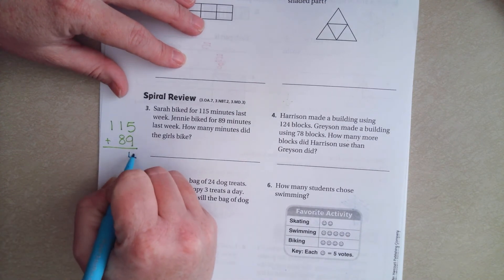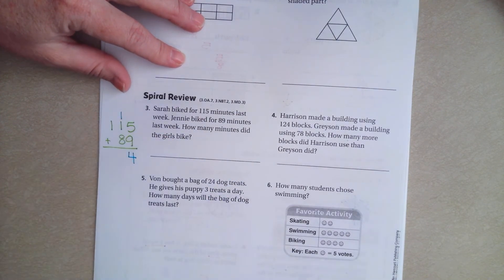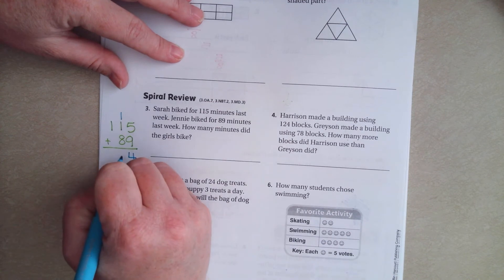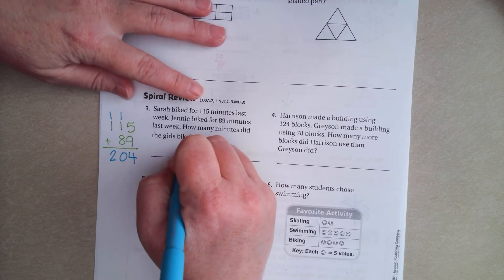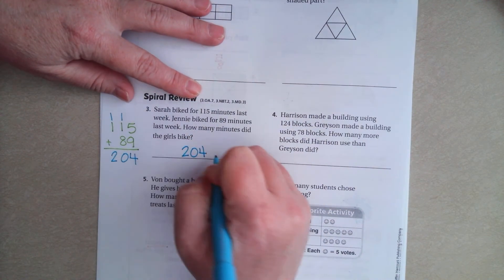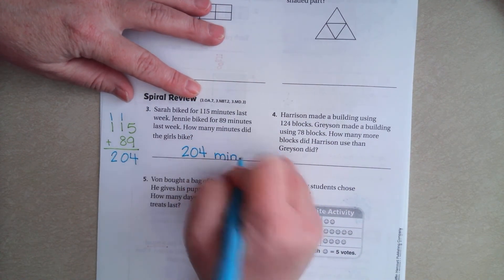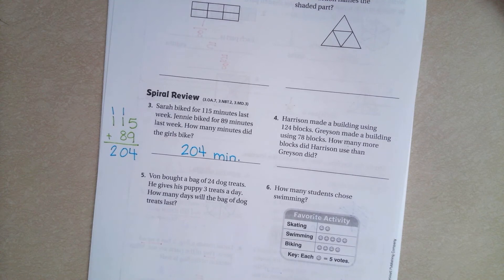So, 5 plus 9, 14. Carry that 1. 1 plus 1 is 2. Plus 8 is 10. We're going to carry a 1 again. And 2. 204 minutes.